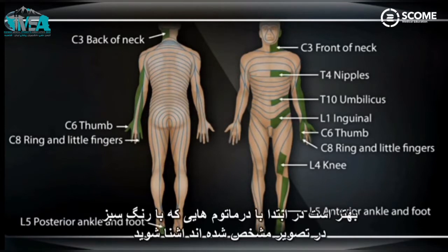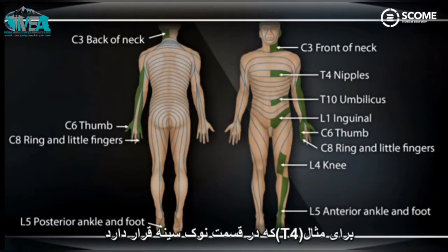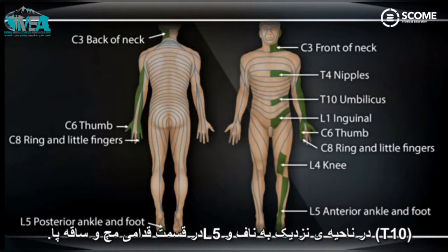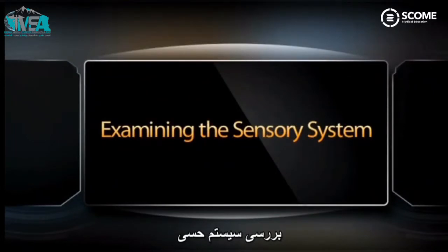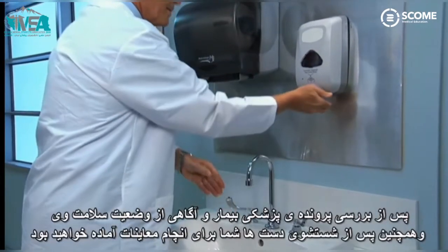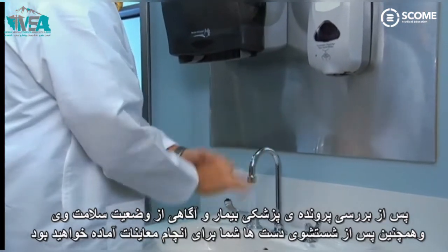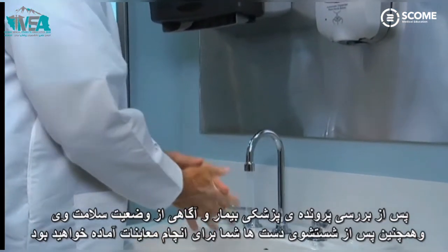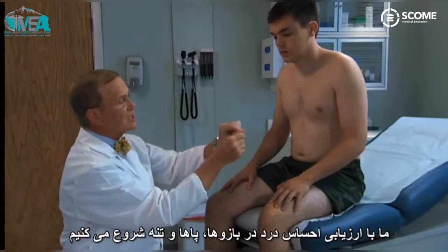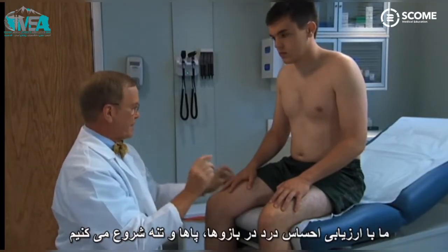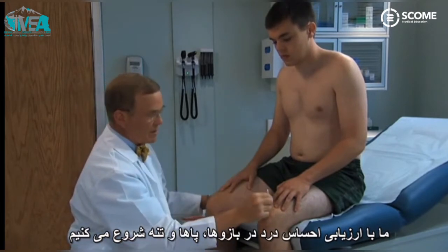It is helpful to familiarize yourself first with key dermatomes. For example, T4 at the nipple line, T10 at the umbilicus, and L5 at the anterior ankle and foot. With the patient's health history in mind and after good hand hygiene, you are ready for the physical examination. Begin the sensory examination by assessing pain sensation in arms, legs, and trunk.